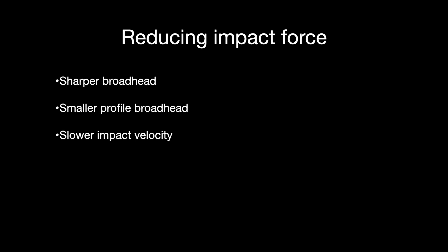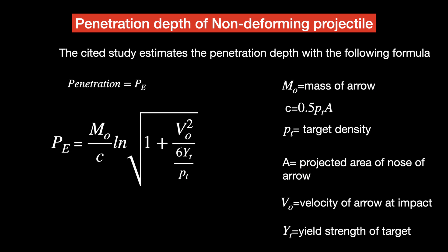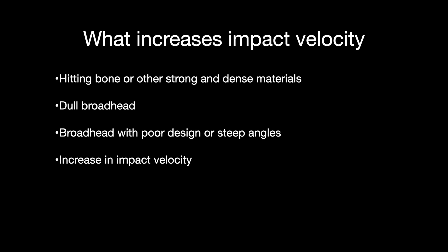There are things we can do to reduce impact force. First, a sharper broadhead. Second, a smaller-profile broadhead or one with a large slope angle. Third, reduce impact velocity. And what increases initial impact force? Hitting bones or other strong, dense materials; dull or poorly designed broadheads; or an increase in impact velocity.